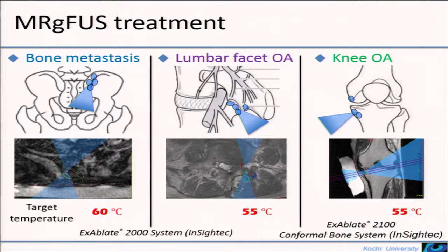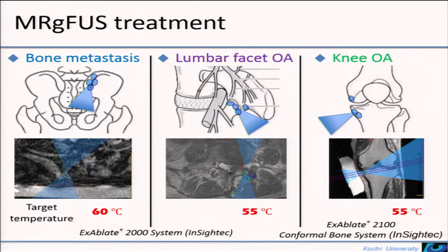The treatment was conducted using an ExAblate system. In bone metastasis, the site of most severe tenderness was irradiated. In lumbar facet OA, the backside of the joint was irradiated. In knee OA, the medial side of the femur and tibia bone associated with tenderness was irradiated. Preset temperature on the surface of bone for each disease is shown on the slide.